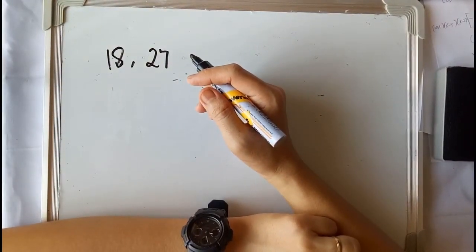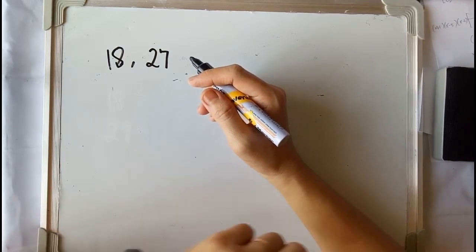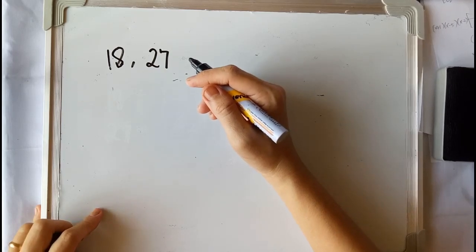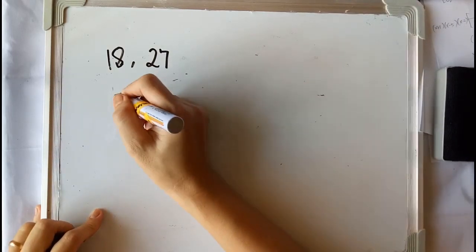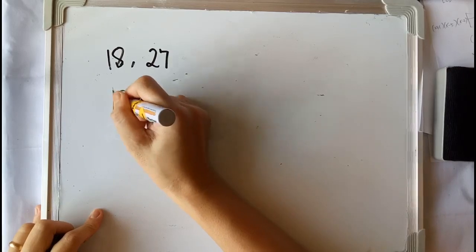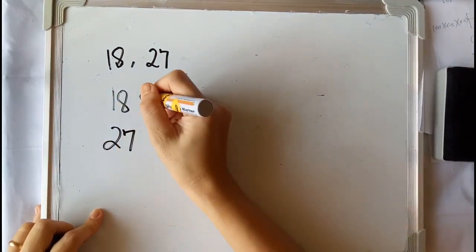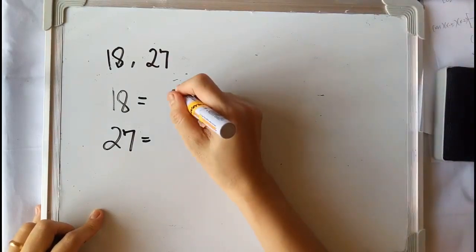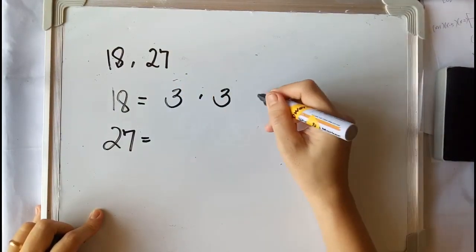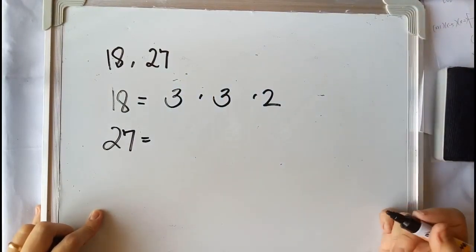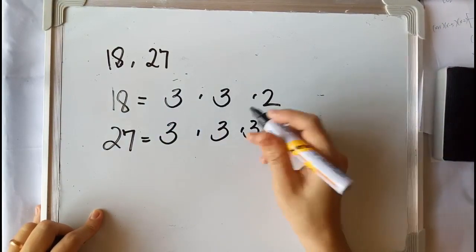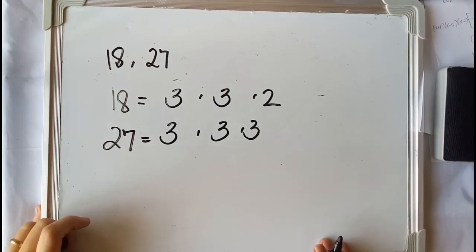Say we have here 18 and 27. The first step is to write 18 and 27 in factored form. So we have: 18 is equal to 3 times 3 times 2, and 27 is equal to 3 times 3 times 3.